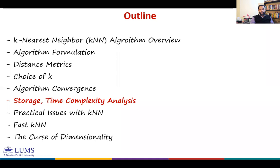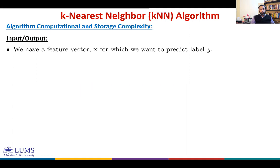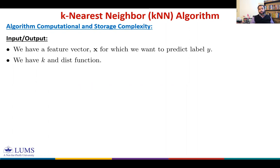Before we analyze computational complexity and storage complexity, let me quickly formulate the KNN algorithm again. For KNN, as an input we give a feature vector x, we give training data as an input, we also give k — the number of neighbors the algorithm uses for carrying out prediction — and the distance function. The algorithm then assigns a predicted label y to the input test point x.